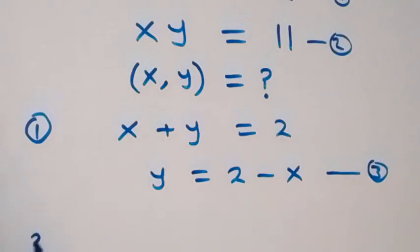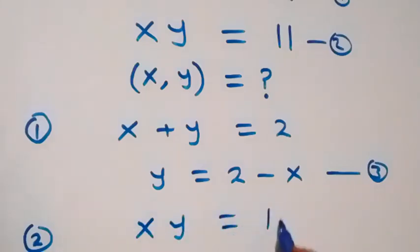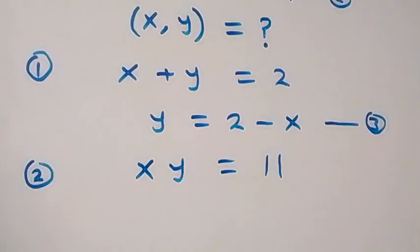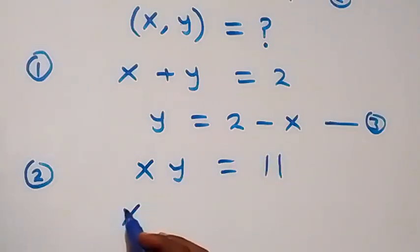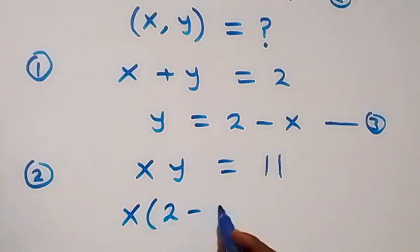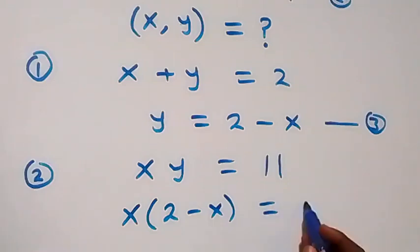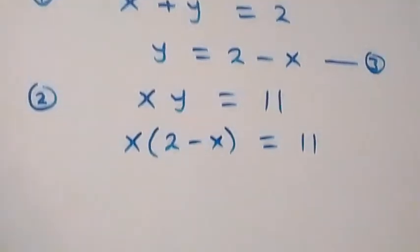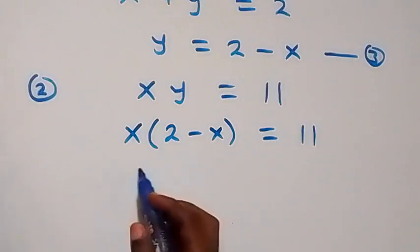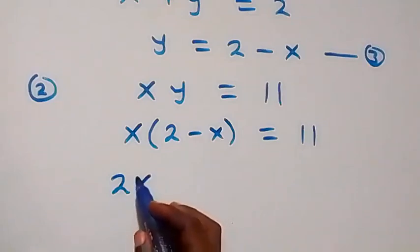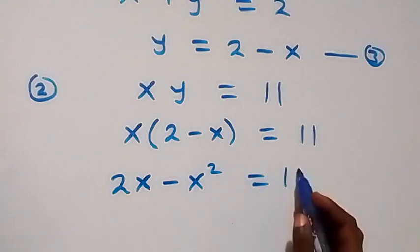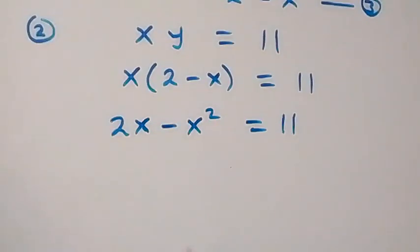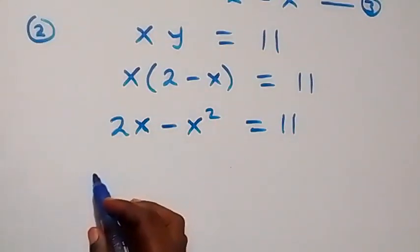From equation two, which is x times y equals to 11, we can substitute equation three. Y will be replaced as 2 minus x, then we have x into bracket 2 minus x close bracket equals to 11. Opening this bracket gives us 2x minus x squared.